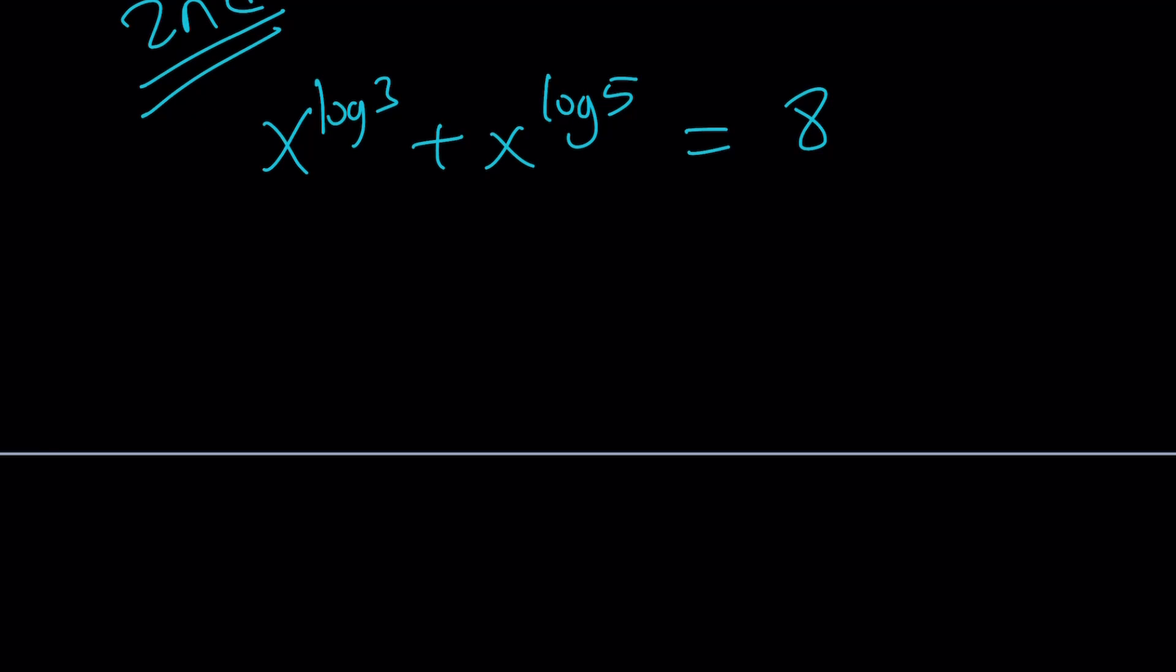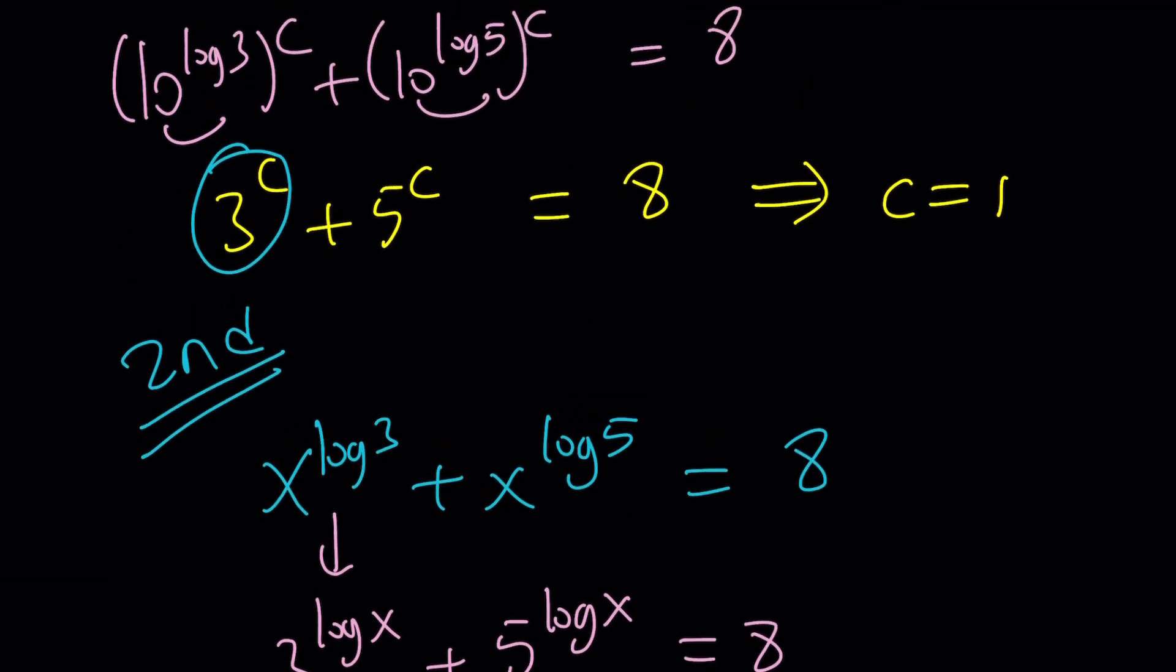Now, here's what we can do then. We can switch the x and the 3. So, we can go ahead and switch this around. And that gives us 3 to the power log x plus 5 to the power log x equals 8. By the way, from here we get c equals 1, but we didn't get x yet.